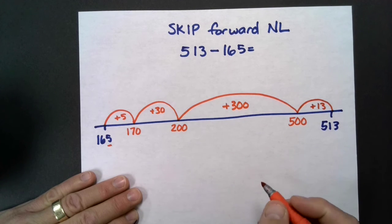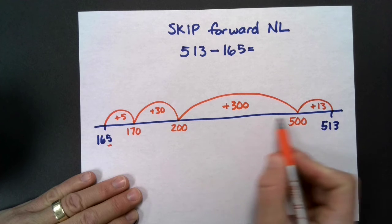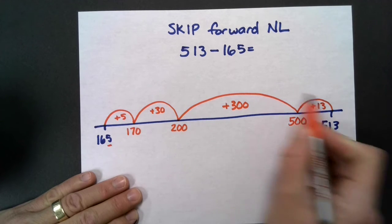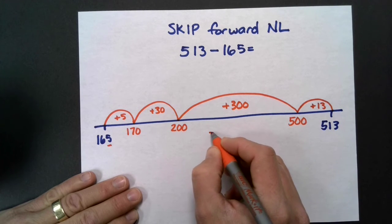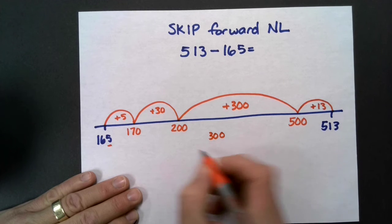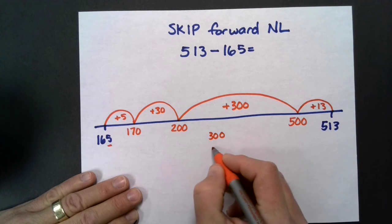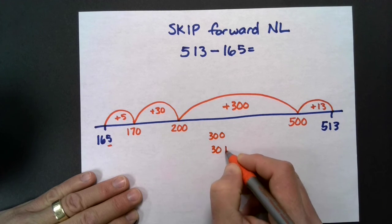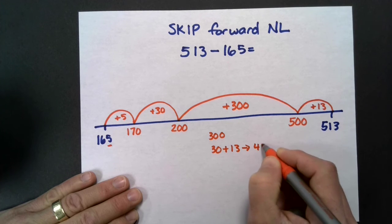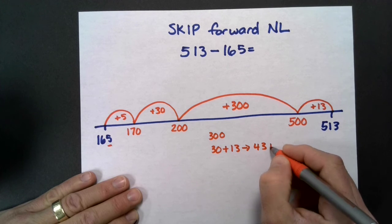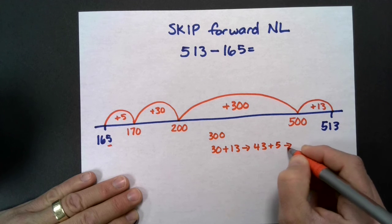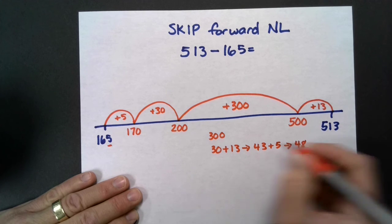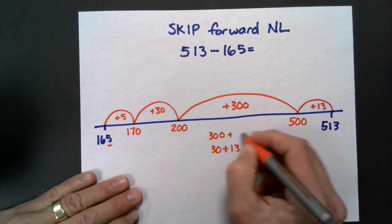Now to find my answer, I need to combine all of my skips. I'm going to add 300 and I'm going to add 30 and 13. I'll do 30 and 13 first for 43, and then I'm going to add 5 for 48.